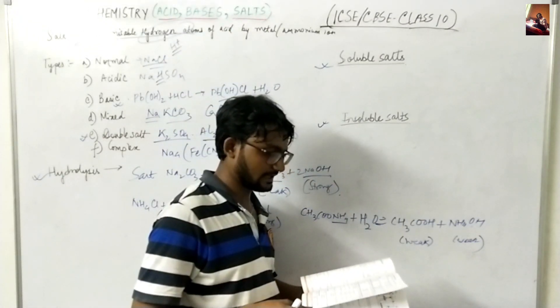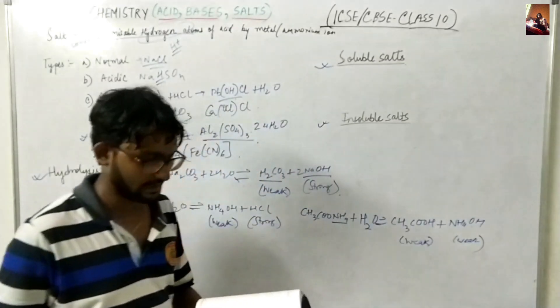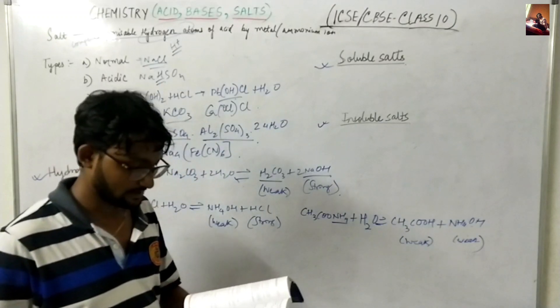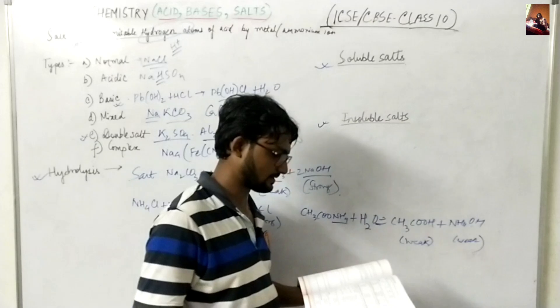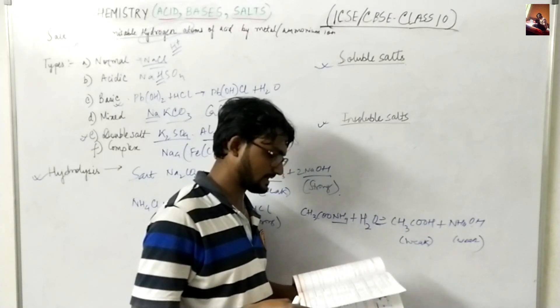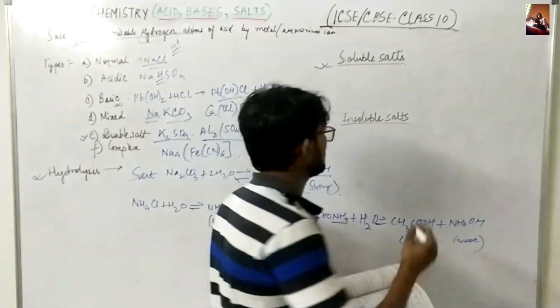Like zinc and NaOH will give you zincate and hydrogen. So various kinds of this are there. Like again act with like acidic oxide like forming SO2 or CO2. These are the acidic oxide and basic oxides. So acidic oxide and basic oxides will produce a salt that will be obviously soluble.